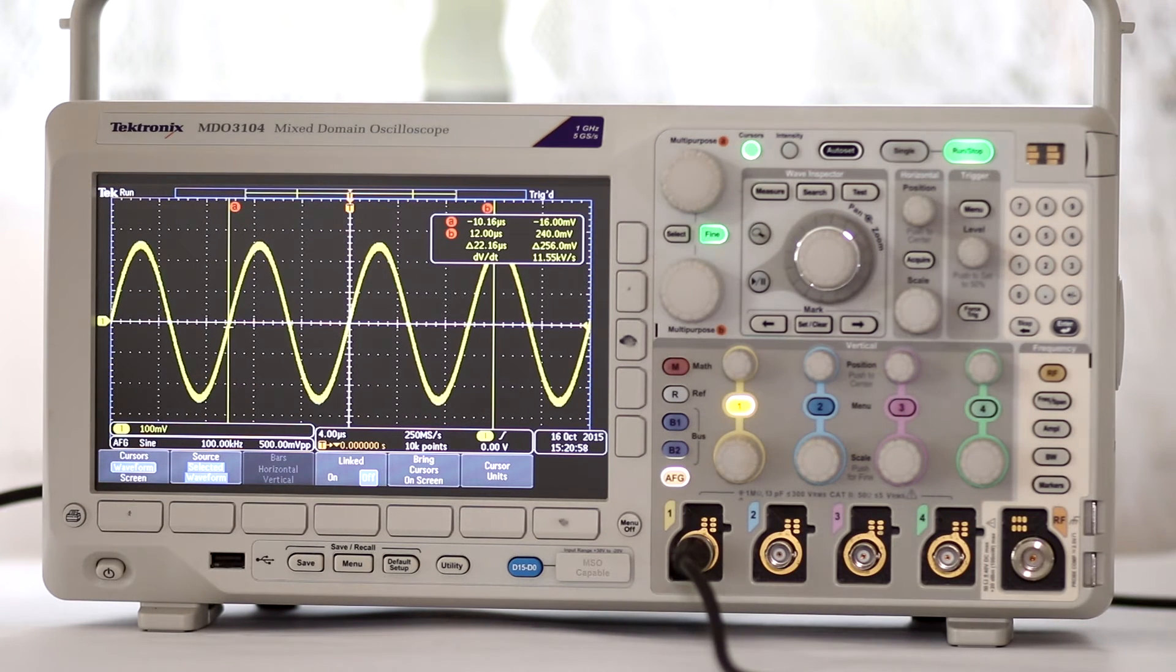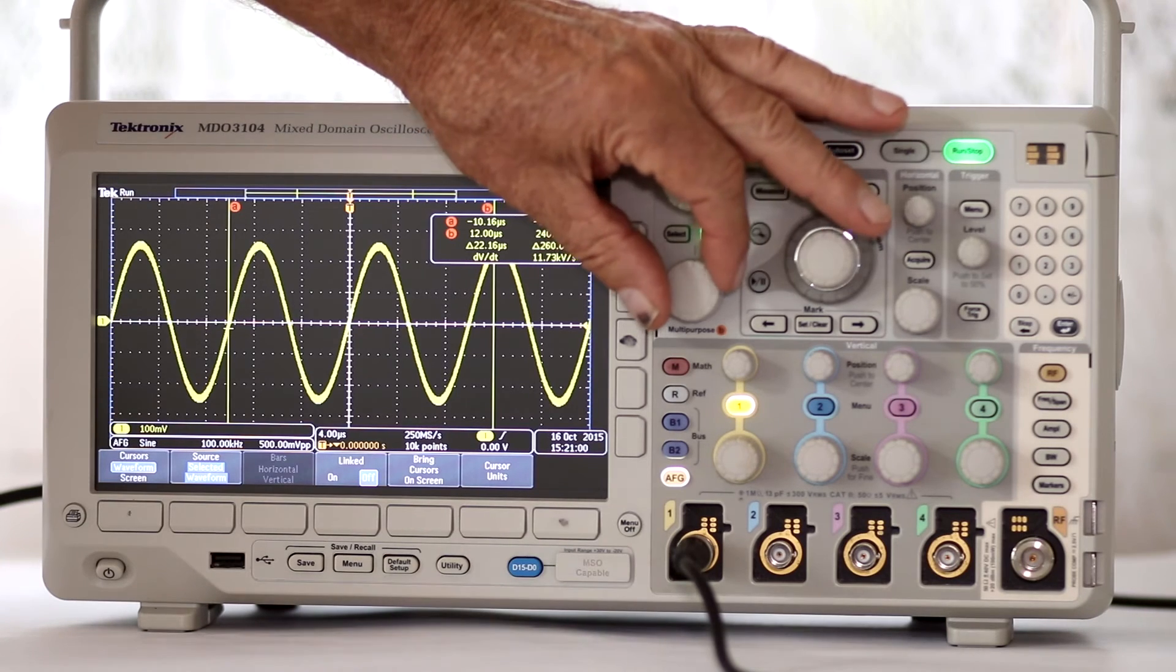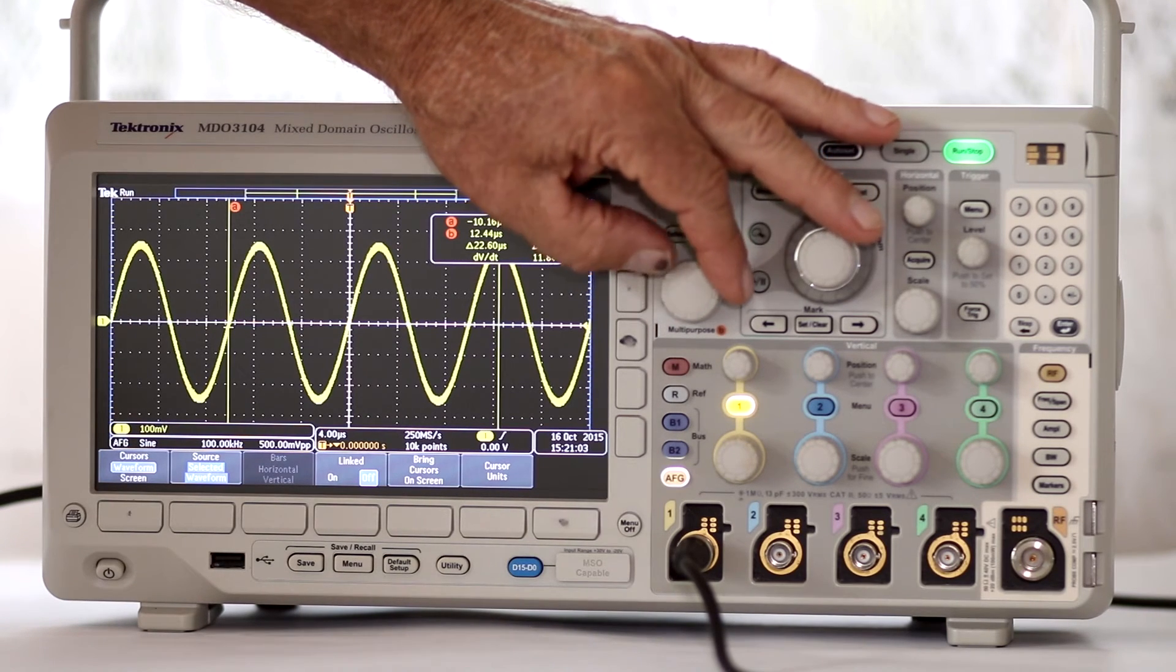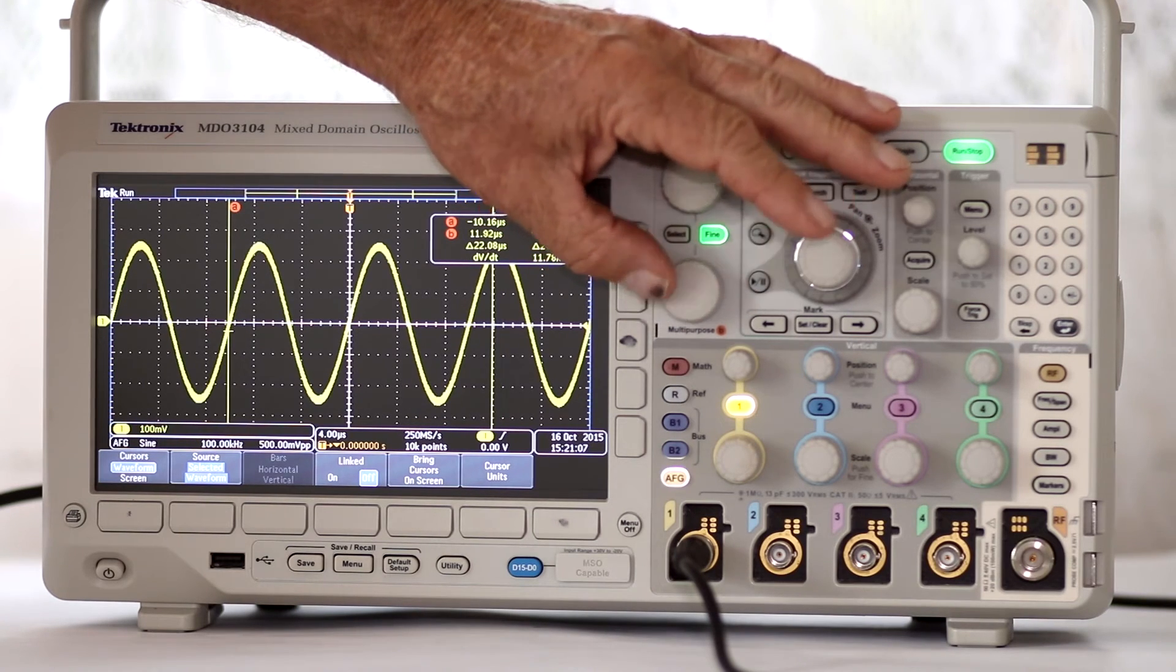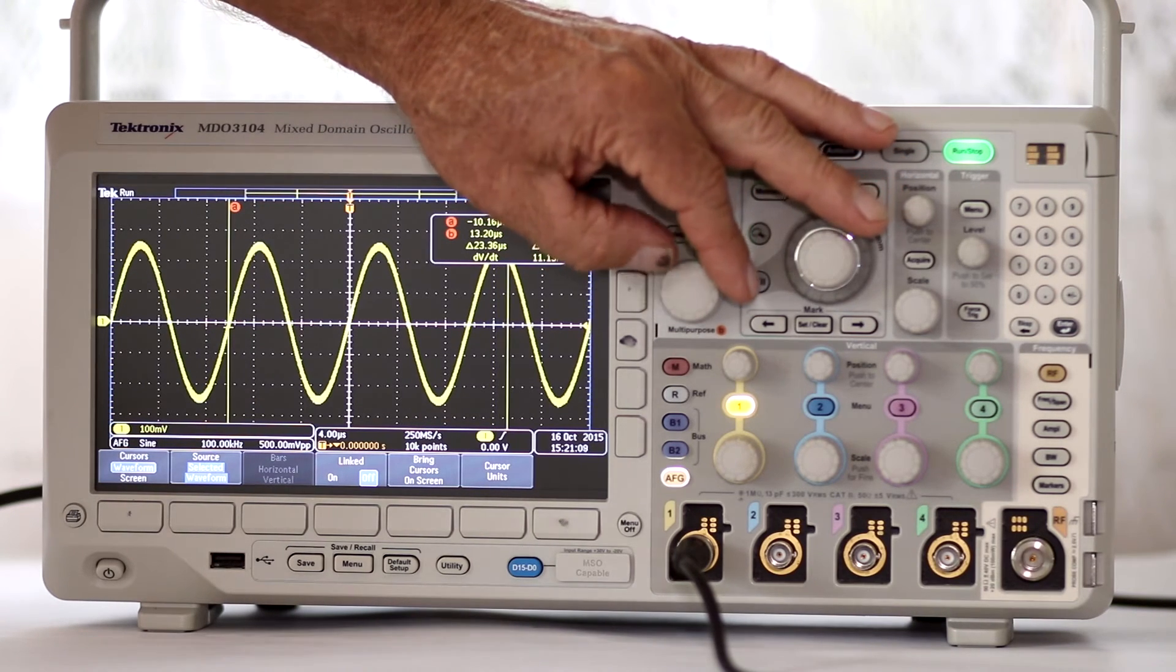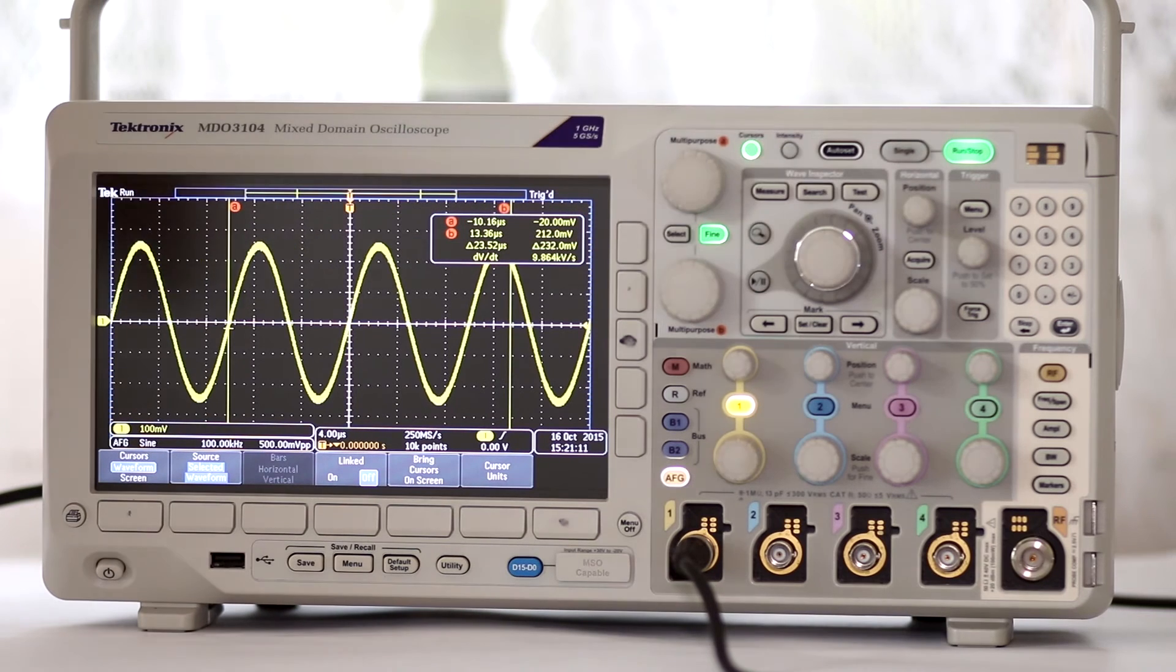Multipurpose knob B moves the right-hand cursor, and the values in the cursor readout window change, as you would expect. The whole time, regardless of which knob is turned, the values in the right-hand column fluctuate continuously, since they represent very small amounts of amplitude in the microvolt range.